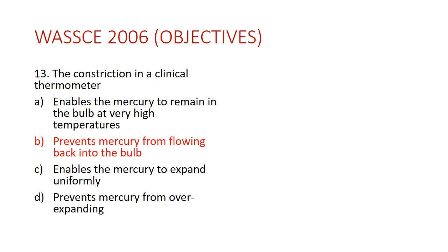Question thirteen: the constriction in a clinical thermometer functions to prevent mercury from flowing back into the bulb. This is one unique feature that distinguishes clinical thermometers from other types. The constriction is sometimes called a kink — a curve that prevents mercury from flowing back when a reading is taken, keeping the reading stable so it can be observed.